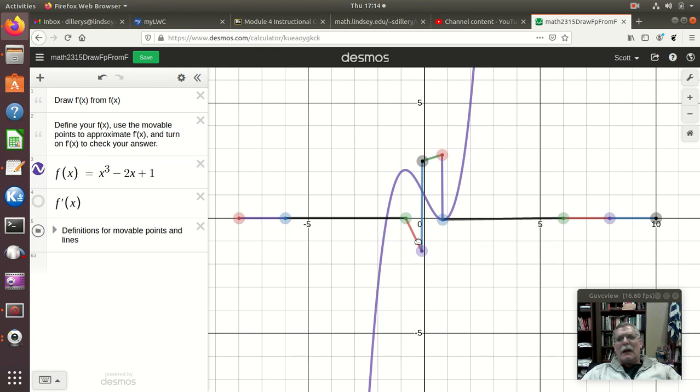Okay. And now, as I look at this, in between those two critical points, the function is decreasing. So the derivative is negative. So I can bring these kind of down like this. And I can just kind of move them around a little bit like that. So I think it will look something like that in between those.